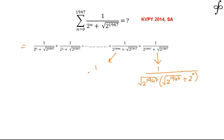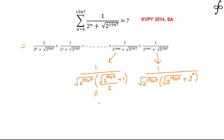Similarly for the penultimate term, taking root 2 to the power 1947 common, it comes out to be root 2 to the power 1947 divided by (2 plus 1), which is basically 2 divided by root 2 to the power 1947, times (root 2 to the power 1947 plus 2). The 2 goes into the numerator.